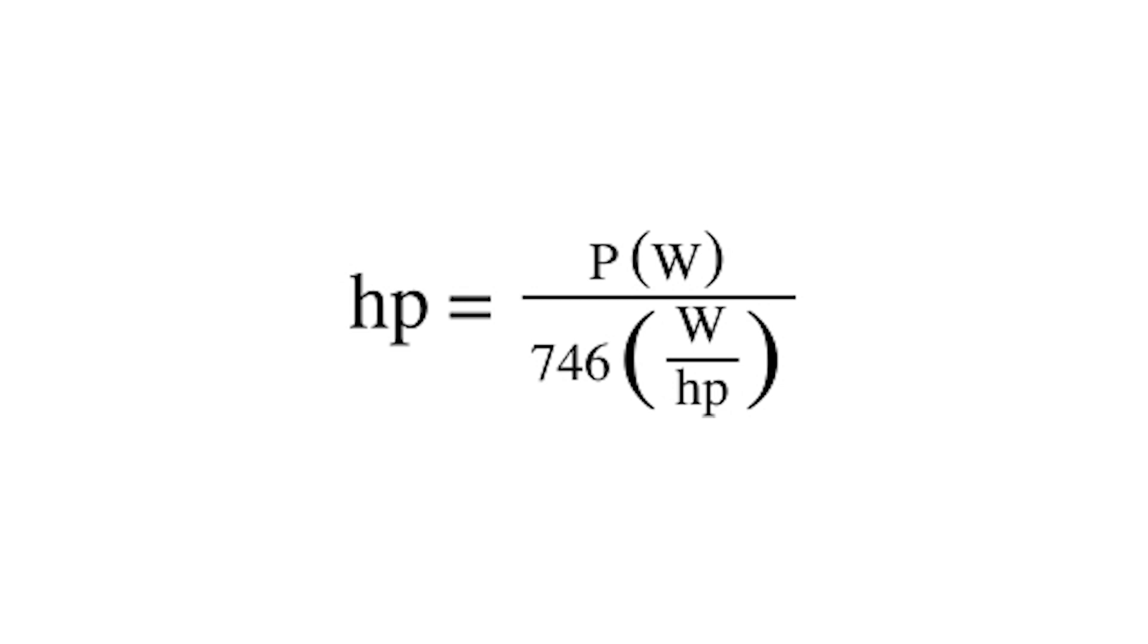Therefore, to convert power from watts to horsepower, divide the power in watts by 746.